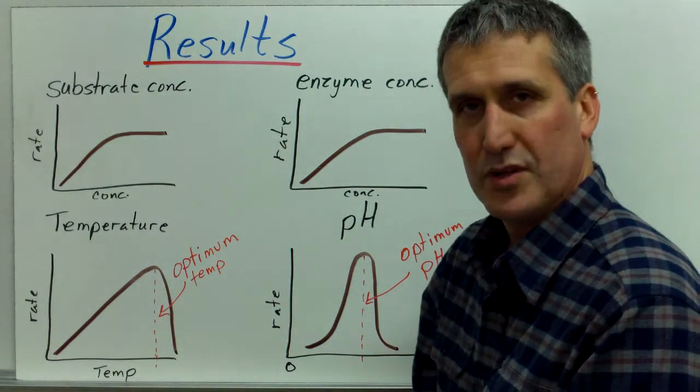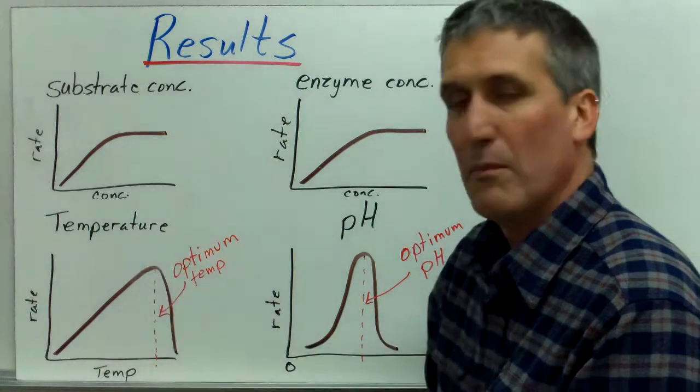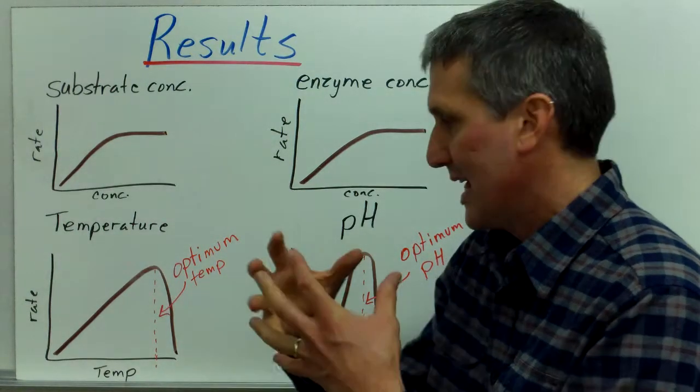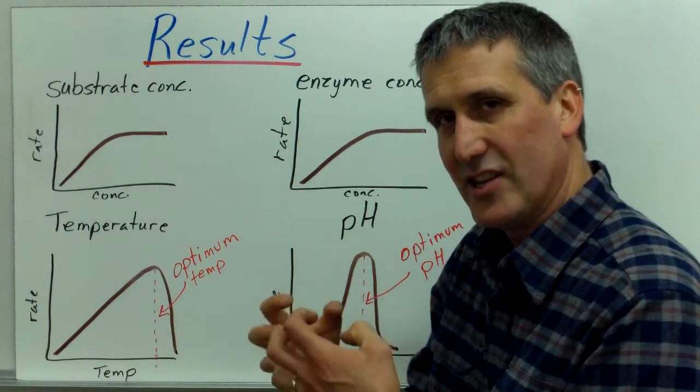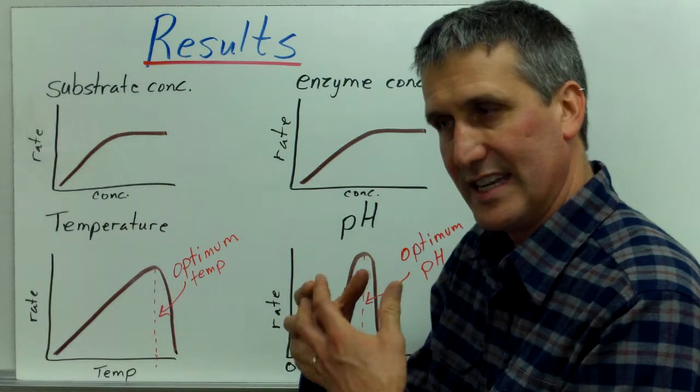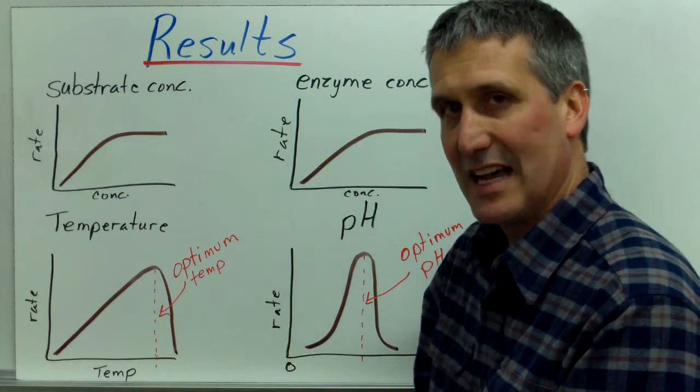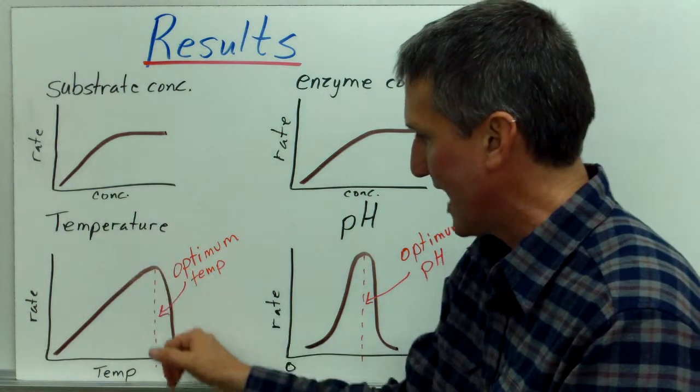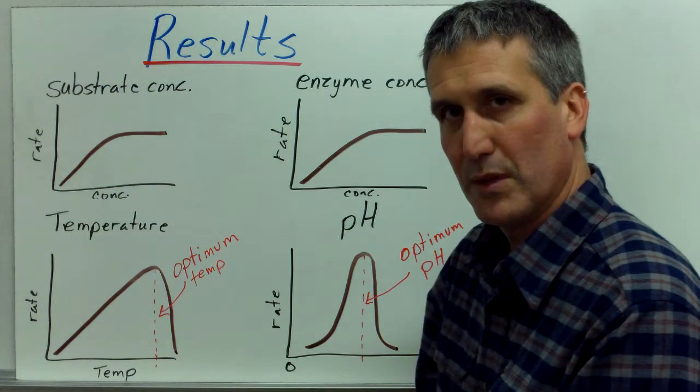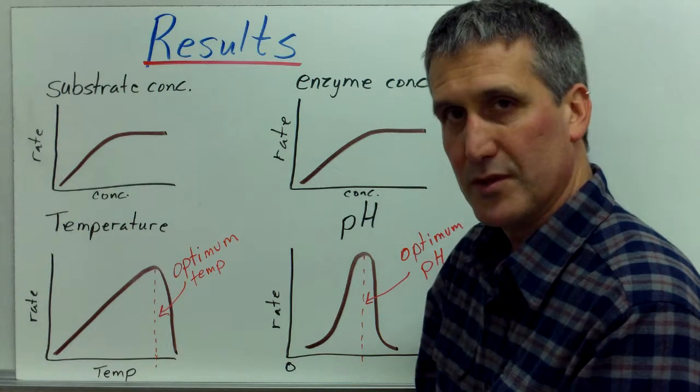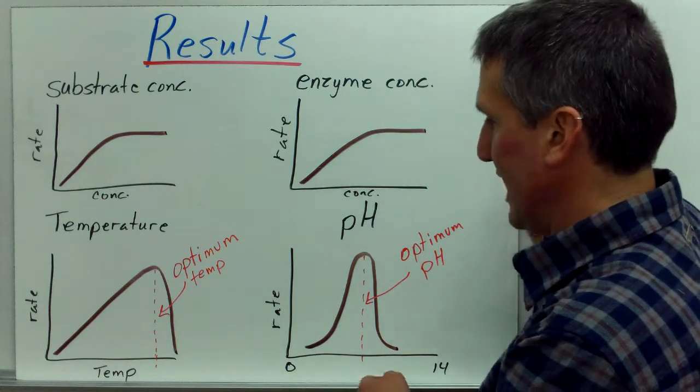You get up to an optimum temperature. When you go above that optimum temperature, the enzyme actually begins to denature. Once it begins to denature, it means it's losing its shape, so it's not able to catalyze the reaction. You see the reaction rate falls off rather sharply above the optimum temperature because the enzyme has become denatured.